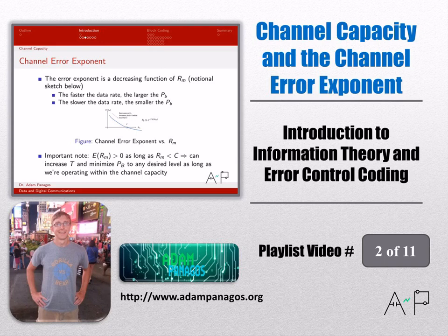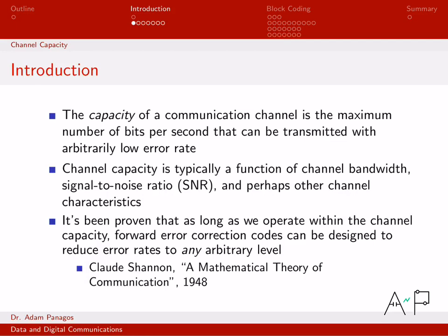All right, so let's take a look at one of the more fundamental concepts from information theory, the channel capacity of a channel. The capacity of a channel is just a number, and it tells us the maximum data rate or the maximum number of bits per second that can be transmitted over the channel with arbitrarily low error rate.